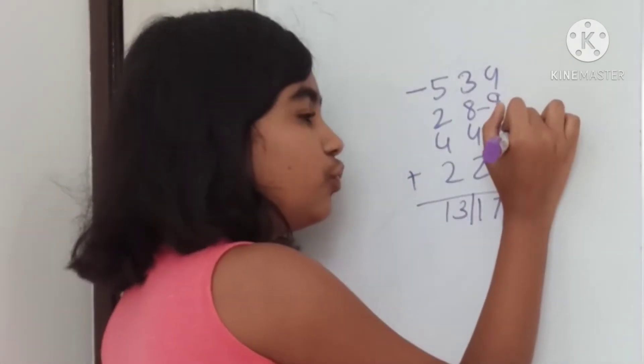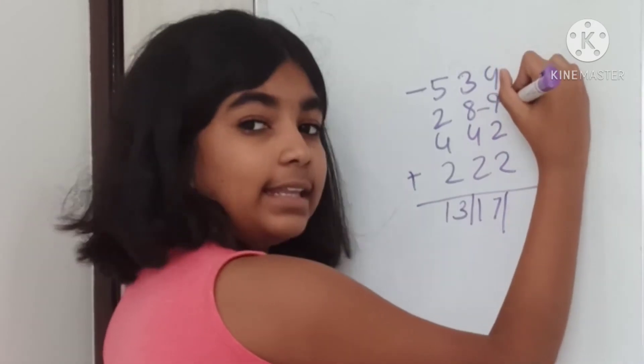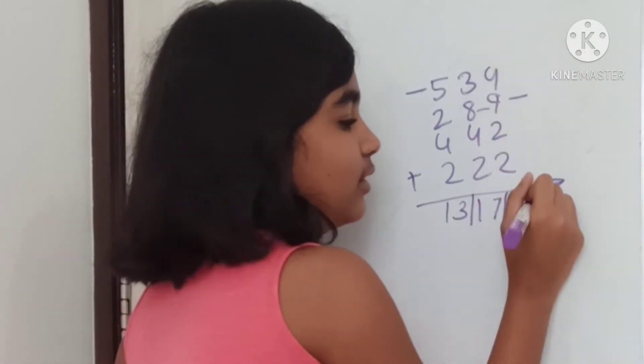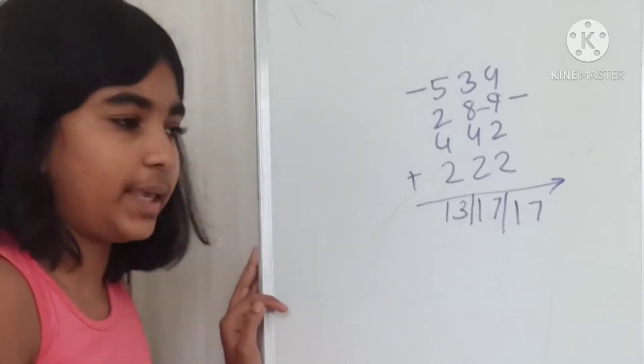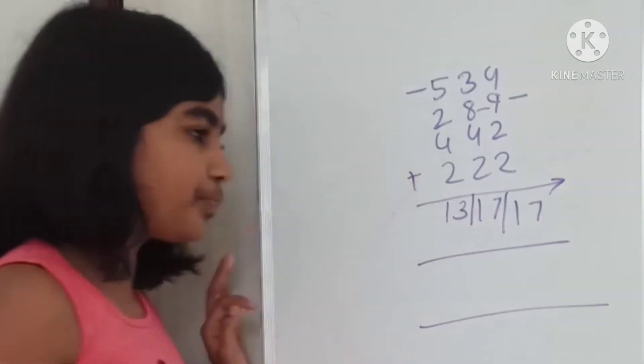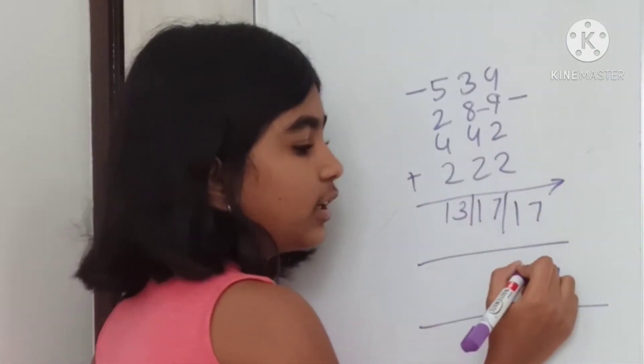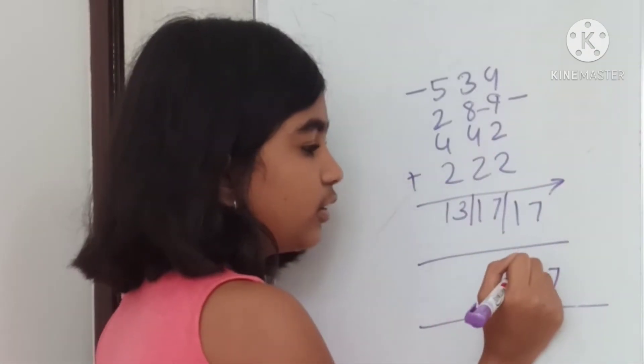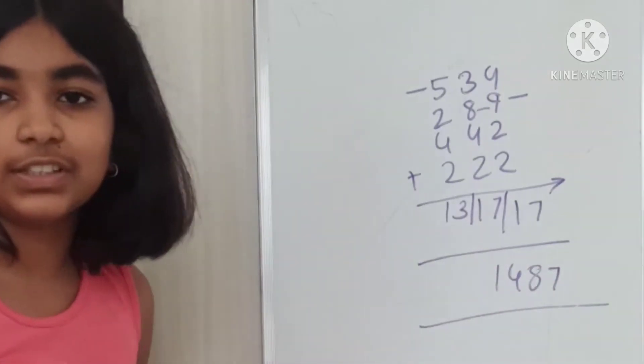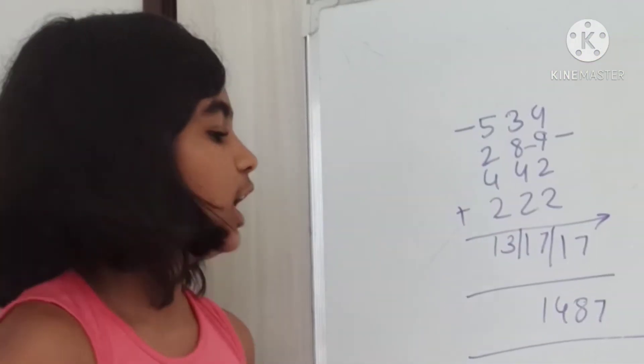2 plus 2, 4. 4 plus 9, 13. 3, 7. Now, what we'll do? We'll take 7 down. And then, 8. Then, this will become 4. And now, that's your answer.